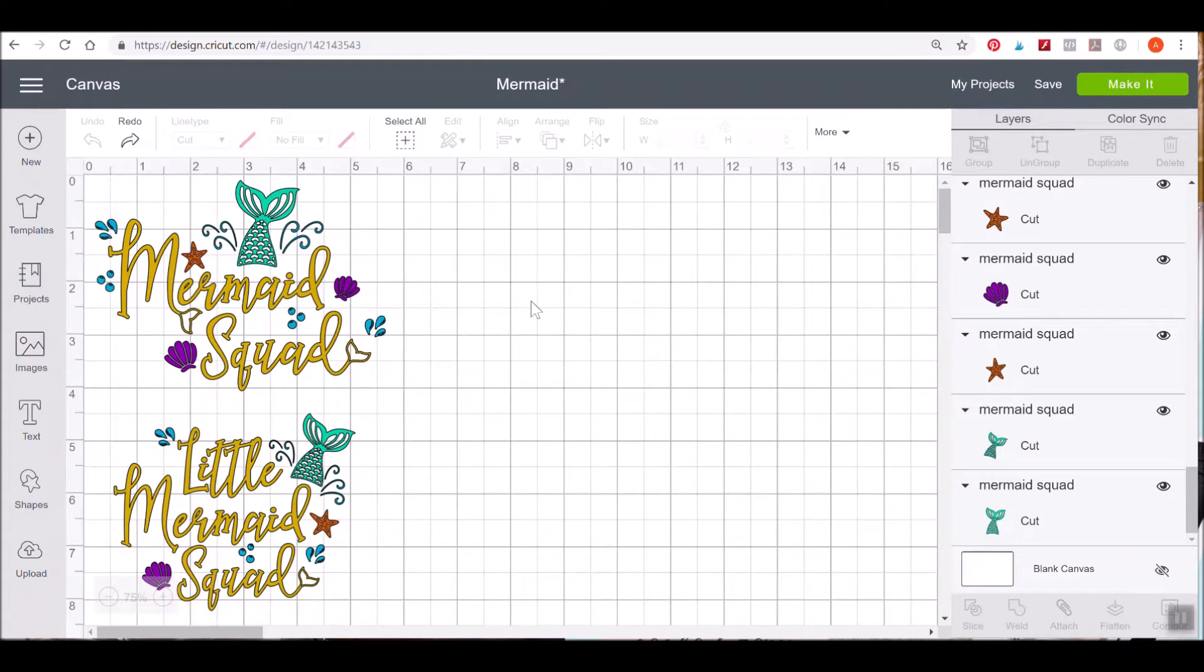What I want to go over real quick before we go to the tutorial part for assembly is when you're dealing with files like this that have lots of different colors to cut out, you're going to want to set them up so that they cut in a way that allows you to place them as they are shown on the screen.